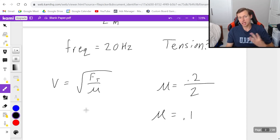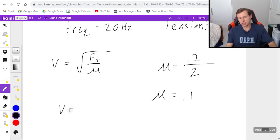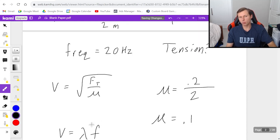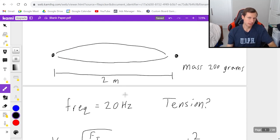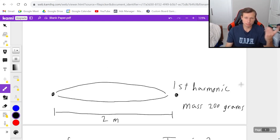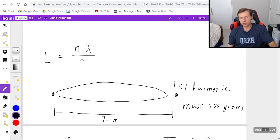So what I'm going to do is I'm going to say v equals lambda times f, and now I got to think about the wavelength for this wave. So if we see here, this is the first harmonic, and the reason why that's important is it means we can use this equation to find the wavelength, L equals n lambda over 2.